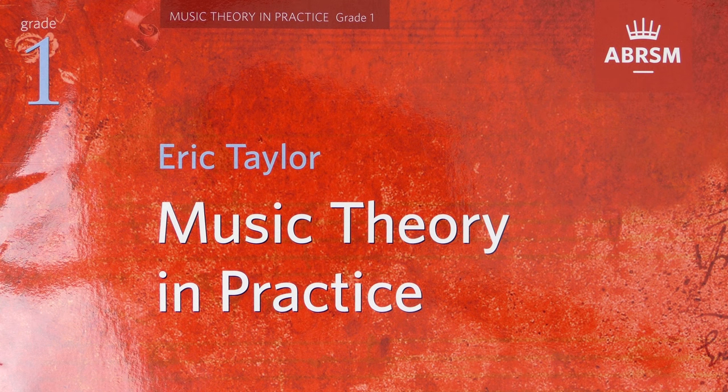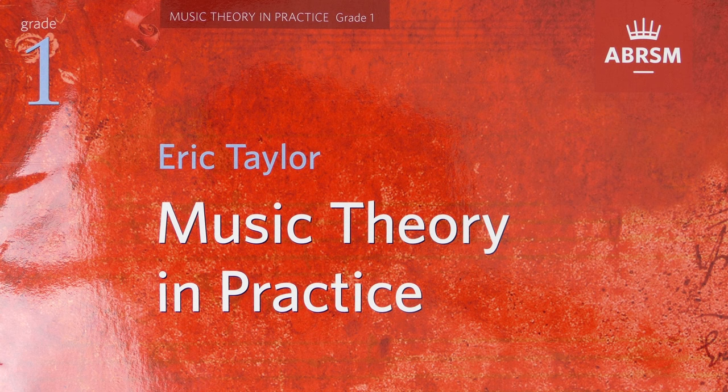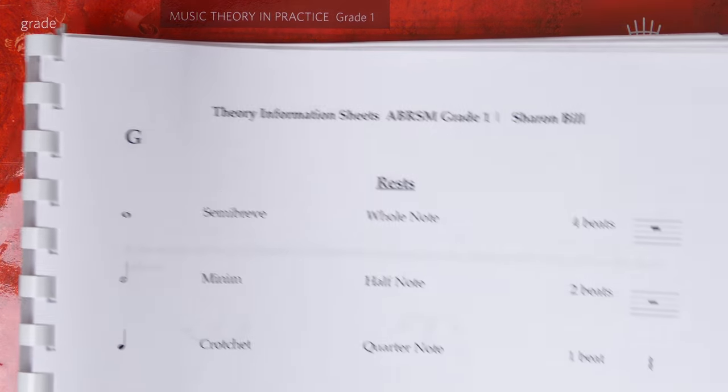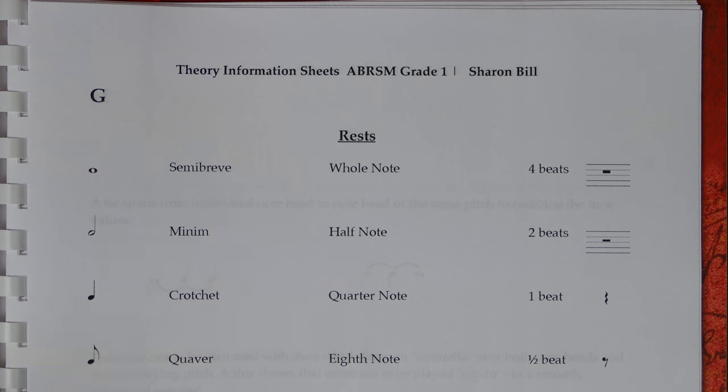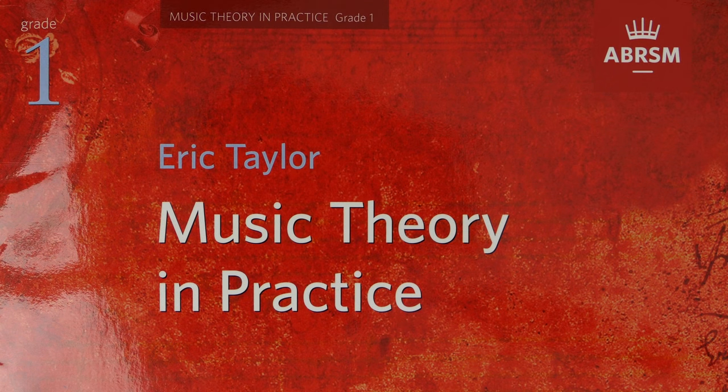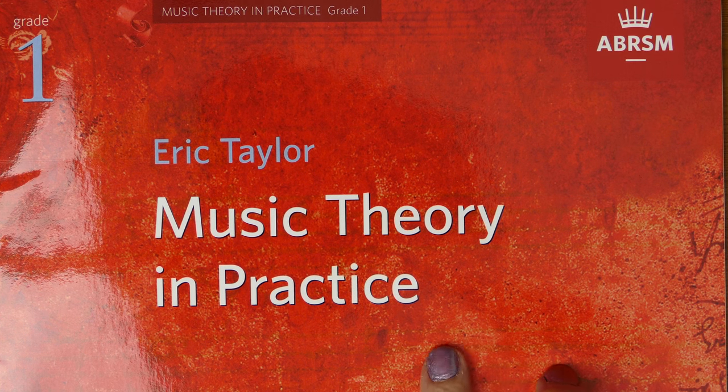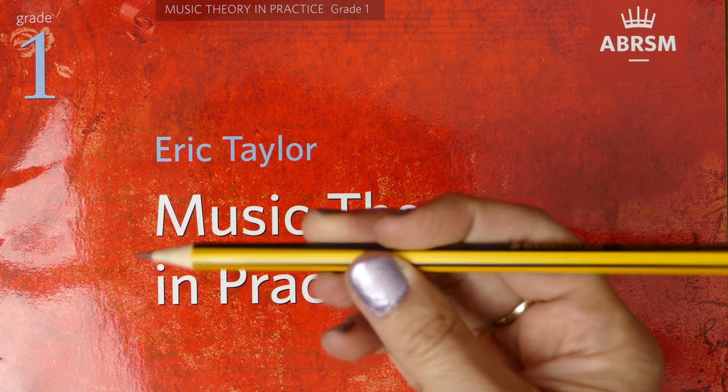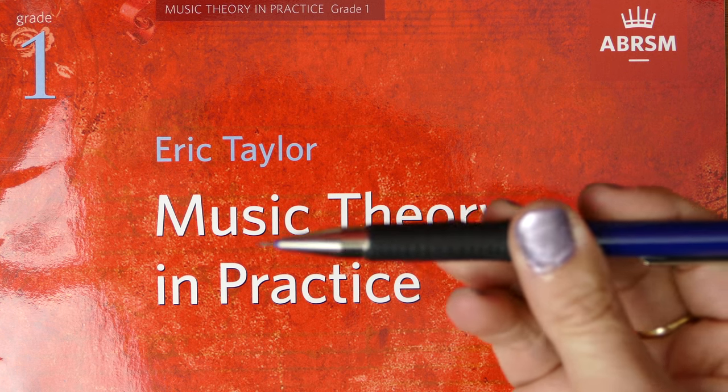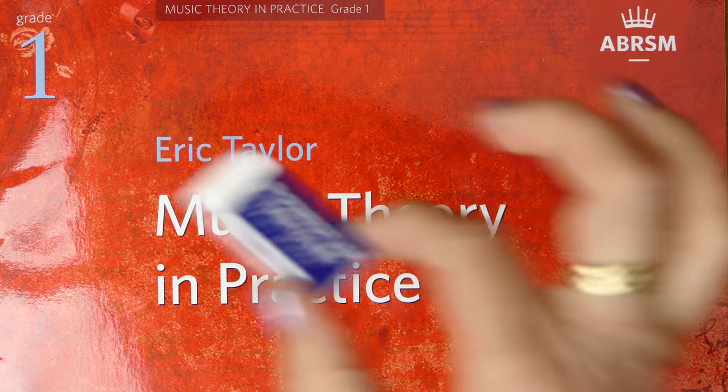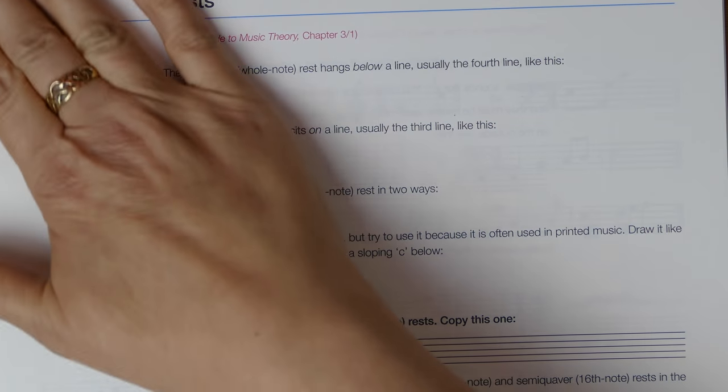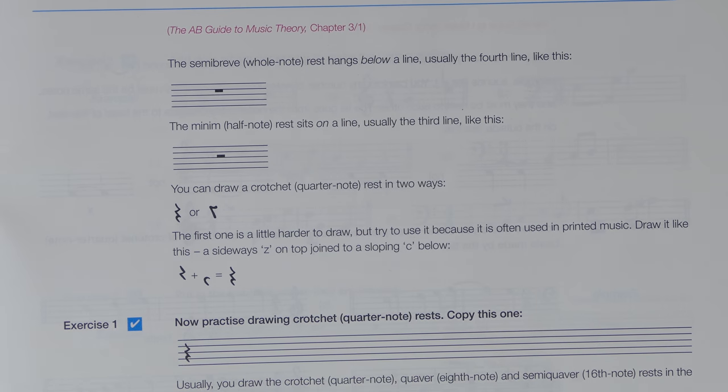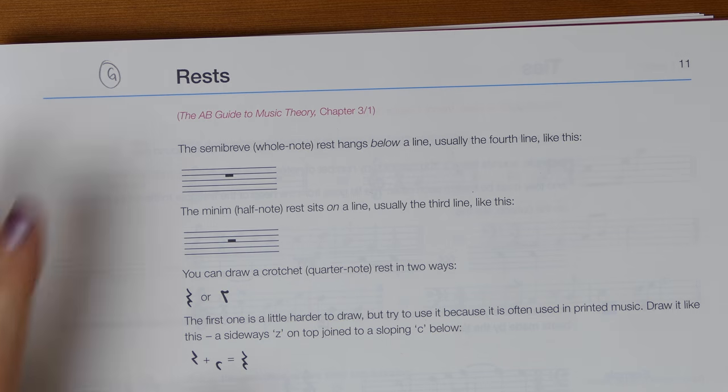So we're now on to Section G which is talking about rests. If you find the theory information sheet on my website, SharonBill.com, find sheet G for grade 1 theory. You need to grab your ABRSM Music Theory and Practice Workbook, a sharp pencil, and an eraser. Let's move to page 11.